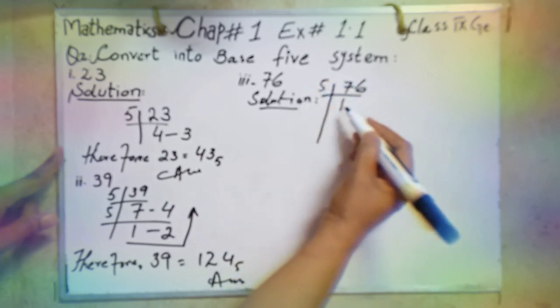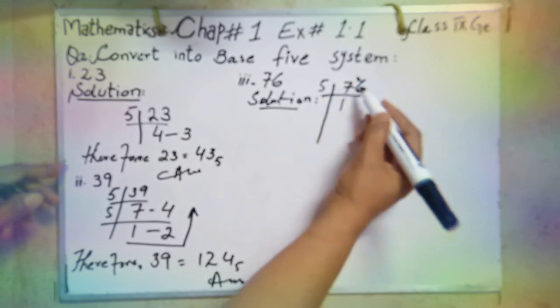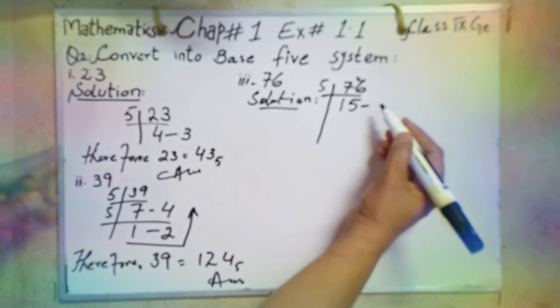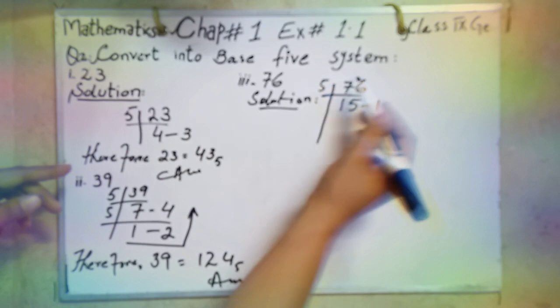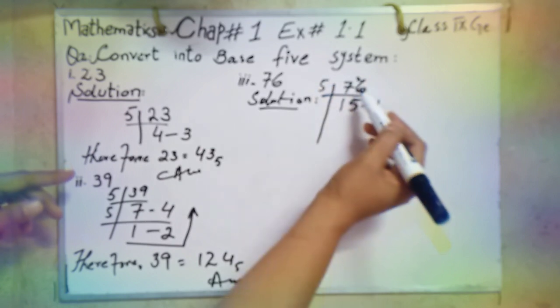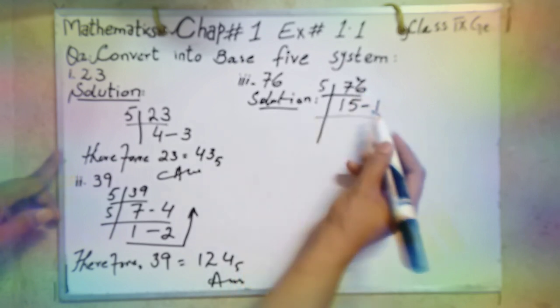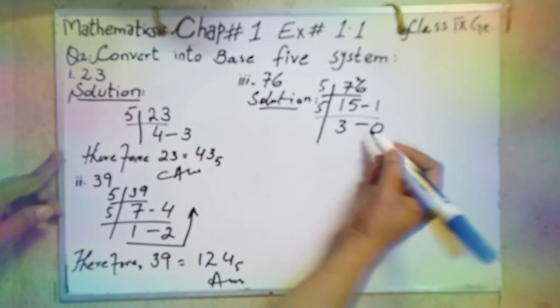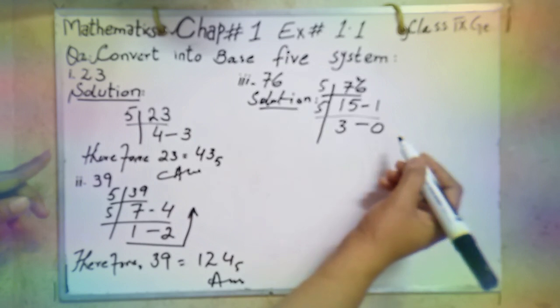5 ones are 5, 7 minus 5, 2 is left. It's become 26. 5 fives are 25. 26 minus 25, 1 is left. So again take 5, 5 threes are 15, 0 is left. 3, 0, 1 answer in Base 5 system.